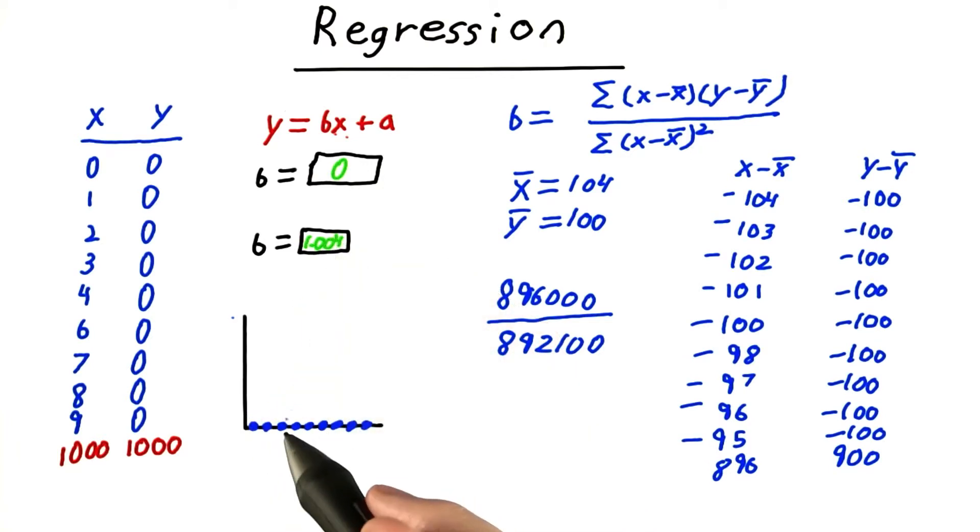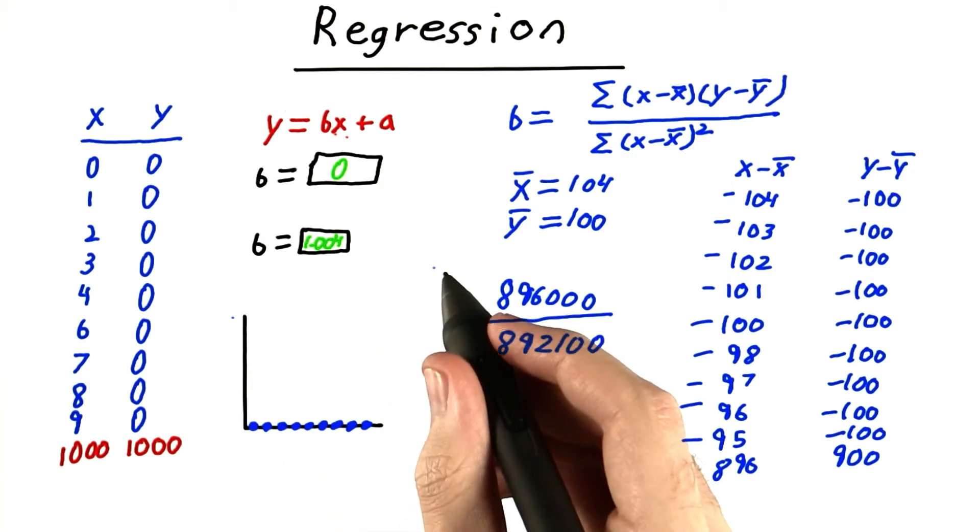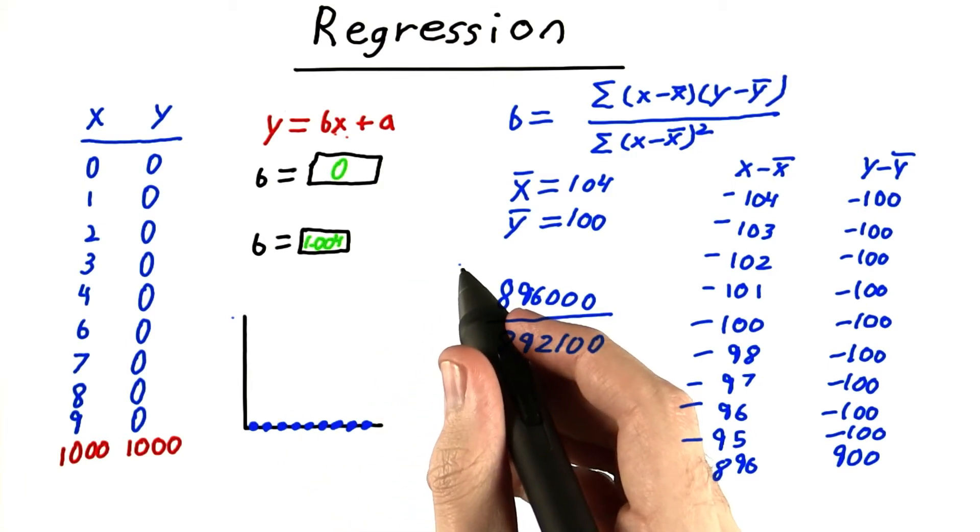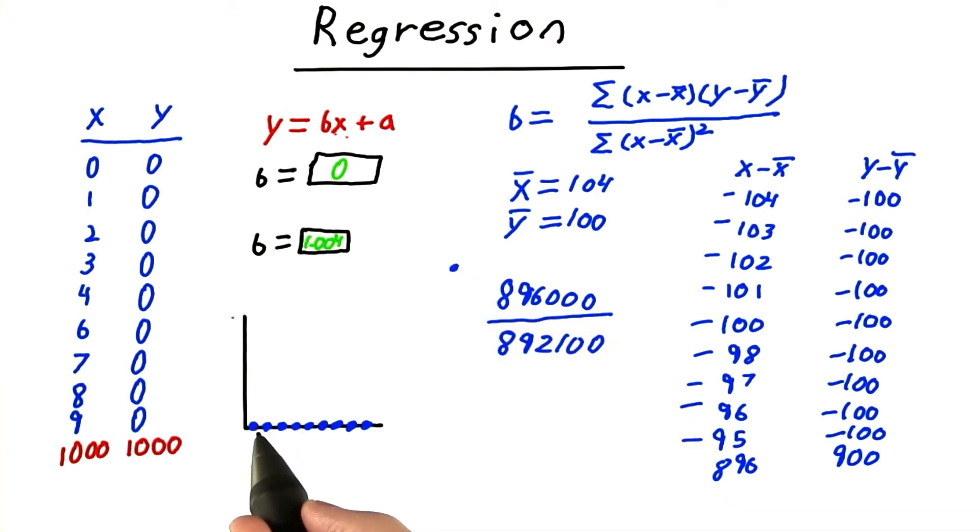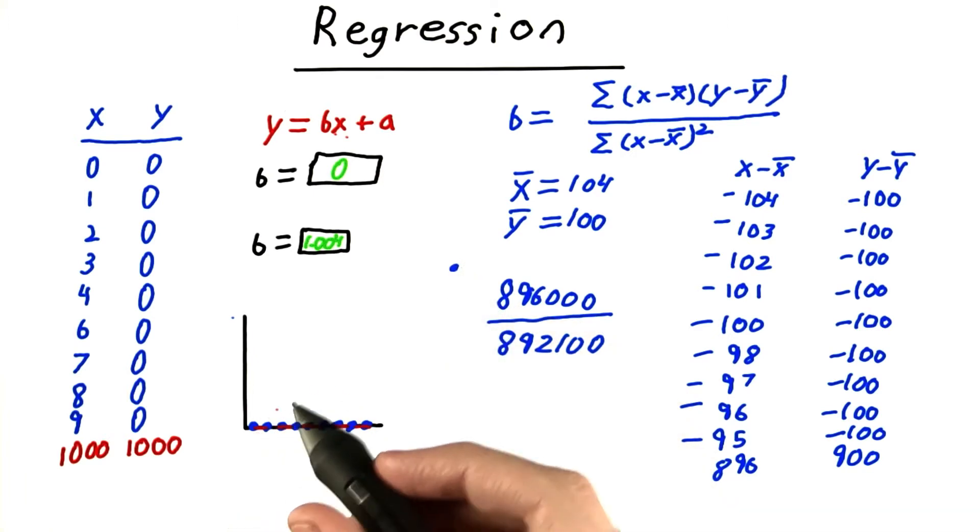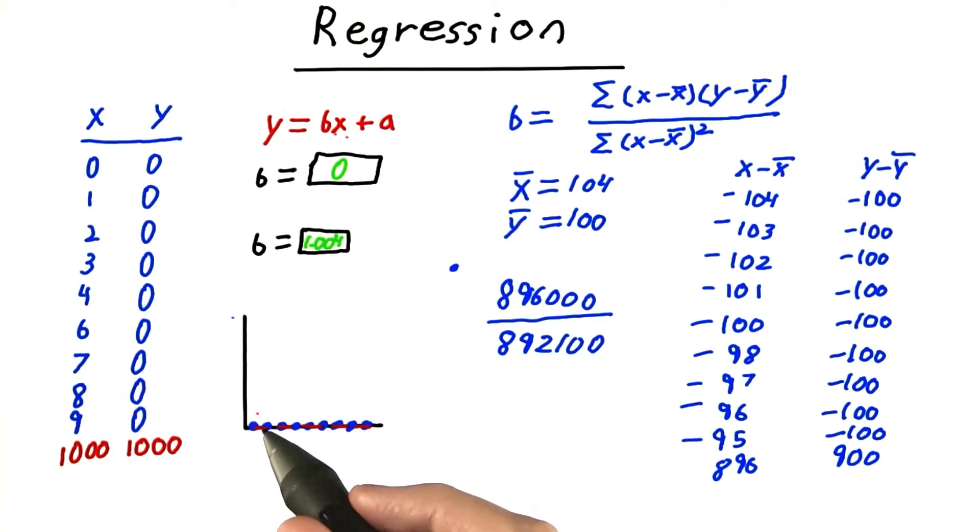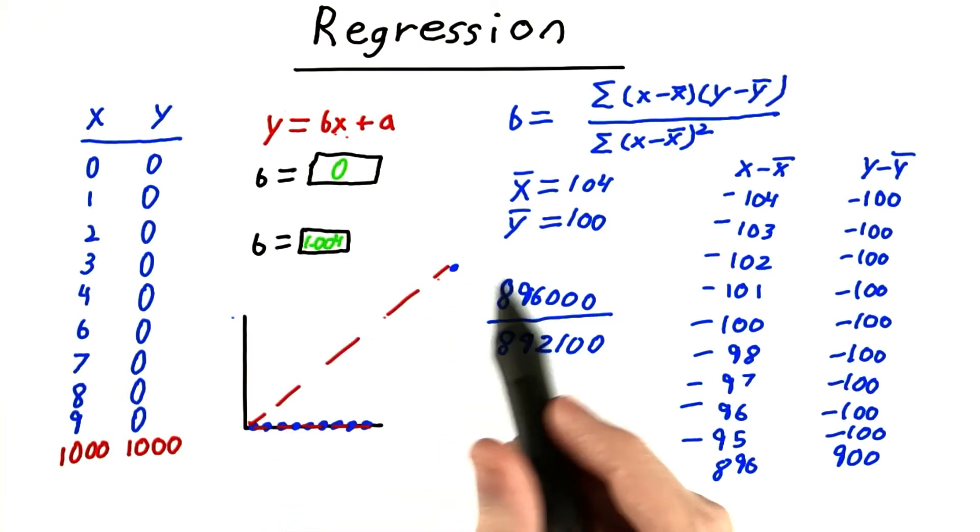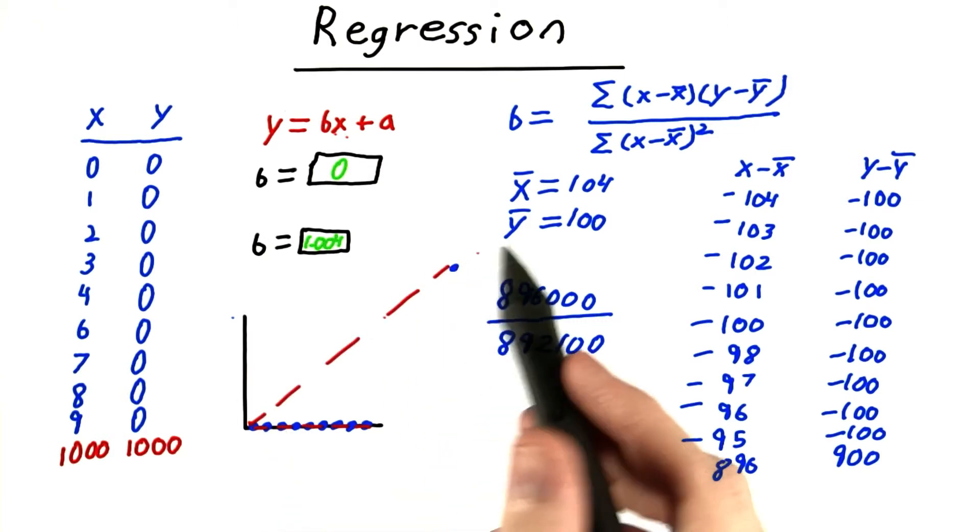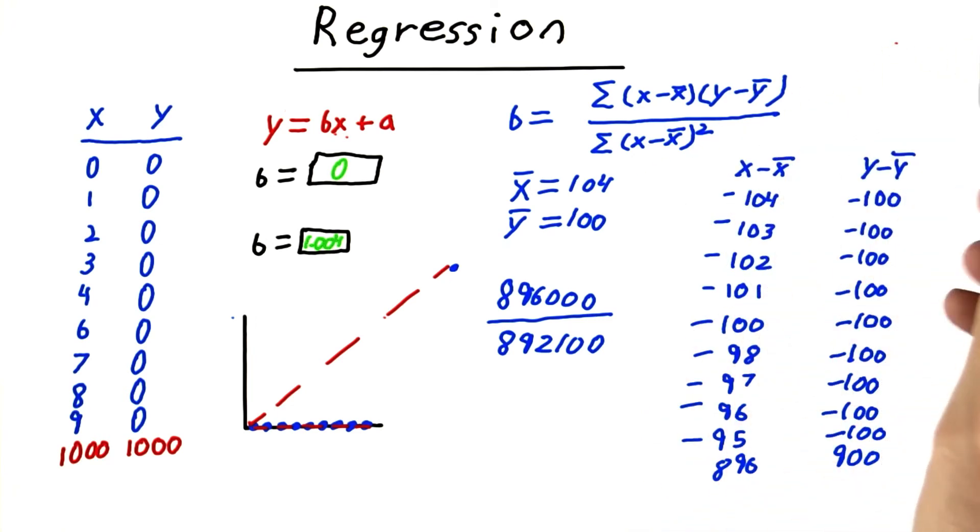This is interesting because it suggests when we have data like this, but add one single point all the way over here, our best fit line goes from being this to being this. Now note this isn't quite to scale. This point would really be all the way over here.